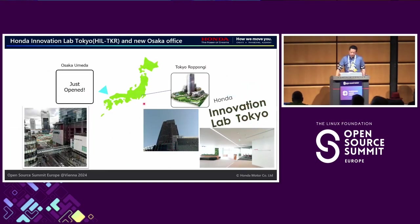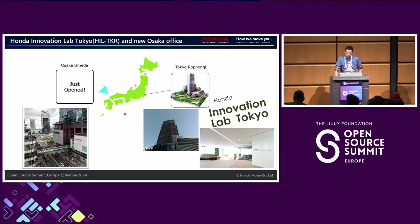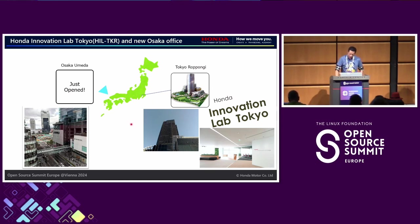This is Honda's software development location in Japan. Currently, we have two branches. One is Tokyo, Roppongi — a very high building. And another one is Osaka, Umeda. Maybe last year, around October, we launched the new branch in Osaka. So currently we have two locations, Tokyo and Osaka, for software development in Honda.